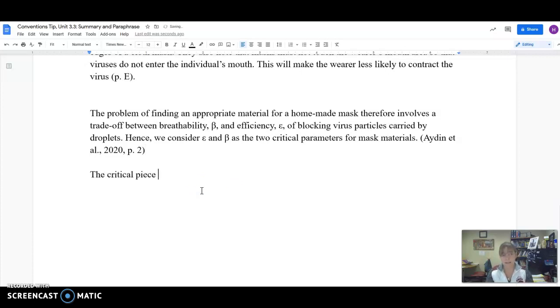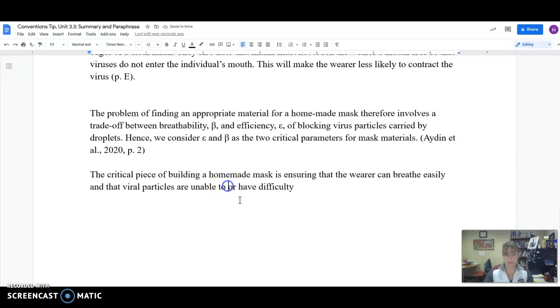So what I need to do is translate: the critical piece of building a homemade mask is ensuring that the wearer can breathe easily and that viral particles are unable to, or have difficulty passing through the fabric. That's the overall idea. That's what they're getting at.